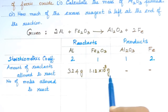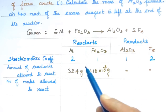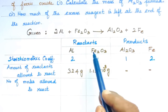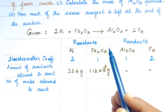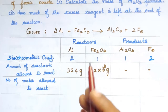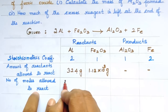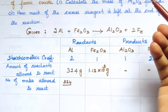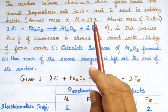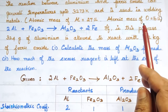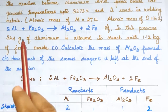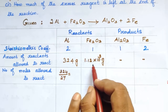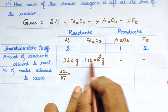For aluminium: number of moles = mass divided by atomic mass = 324 grams divided by 27 g/mol. The atomic mass of aluminium is 27 U as given. 324 divided by 27 equals 12 moles of aluminium.